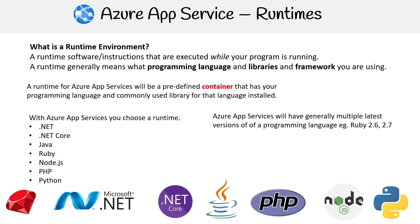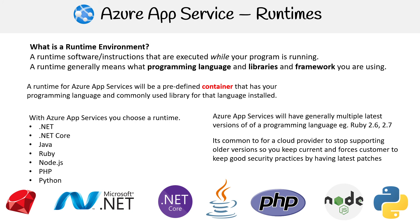Azure App Services generally has multiple versions — Ruby 2.6, 2.7, and a lot of versions for PHP and Node.js. It's pretty common for cloud providers to retire old versions at some point to stop supporting them, just to keep things modern. It also helps you keep up with best security practices, because you should always be trying to upgrade to the latest version for those security patches and things like that.